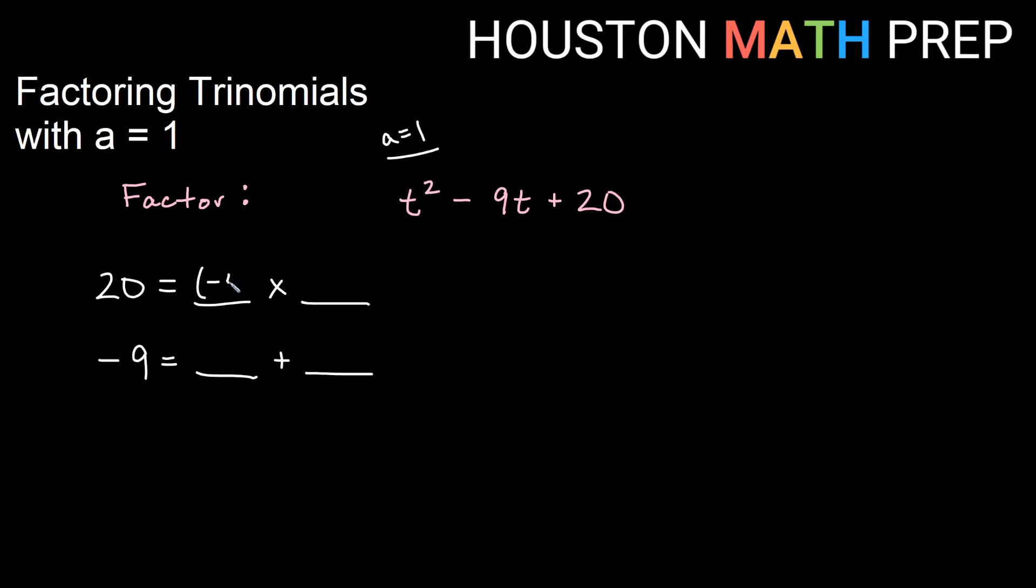So if we can tell here, answers would be negative 4 and negative 5. Negative 4 times negative 5 is positive 20. And negative 4 plus negative 5 gives us negative 9. So negative 4 and negative 5 will be the numbers that go in the factors. Now this is a t squared problem, so we should have t minus 4 and t minus 5. So that we end up with t squared and t terms when we do the distributing of these factors.